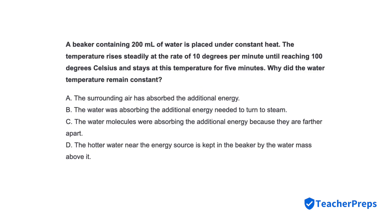A beaker containing 200 mL of water is placed under constant heat. The temperature rises steadily at the rate of 10 degrees per minute until reaching 100 degrees Celsius, and stays at this temperature for 5 minutes. Why did the water temperature remain constant? Correct response is letter B: The water was absorbing the additional energy needed to turn to steam.